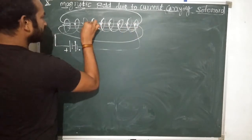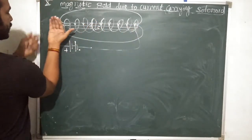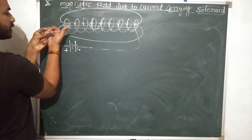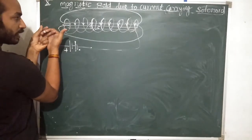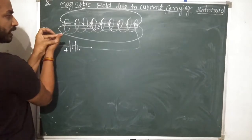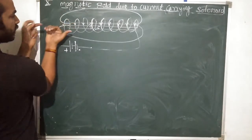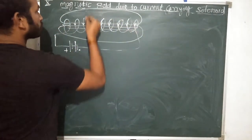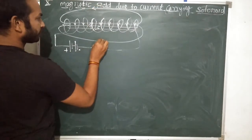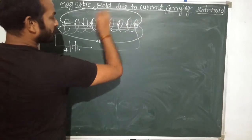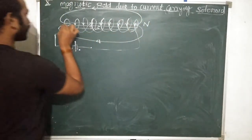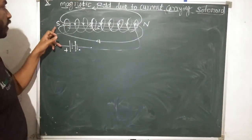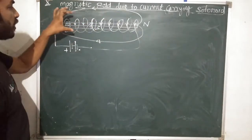The magnetic field is going inside because current is flowing through the circular coil. The fingers give the direction of current and the thumb gives the direction of the magnetic field. Outside the solenoid the field goes from north to south, and inside from south to north — so this is behaving like a magnet.